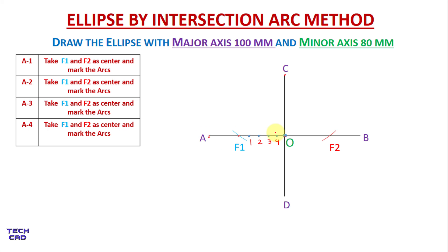Now we will take distances from A to 1, A to 2, A to 3, and A to 4, and take F1 and F2 as centers to mark arcs. Initially, take A to 1 as the distance, take F1 as a center and mark an arc — I have marked an arc here, and in the same way downside I will mark an arc.